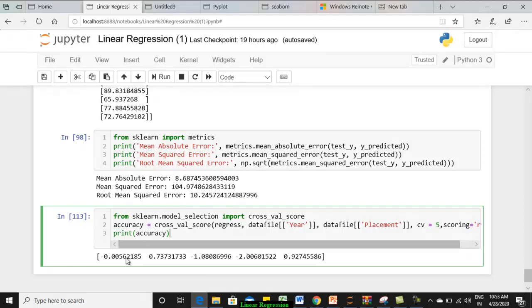Just if you print, you can see five different accuracies have been arrived at. So the cumulative of all these things, that is the mean of all these things can be taken up as the average accuracy of the algorithm.